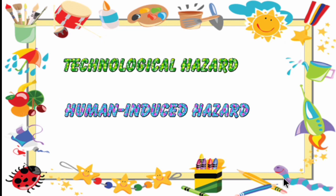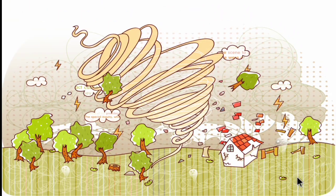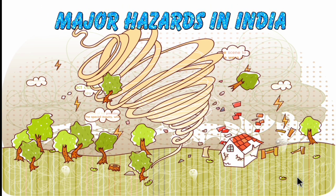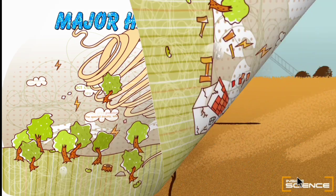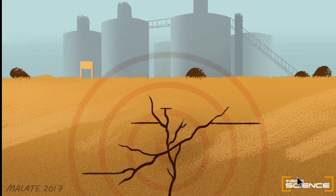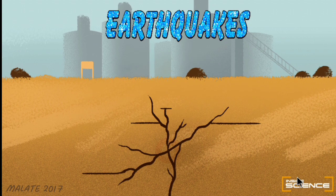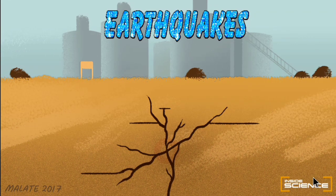We have seen examples and definitions for each in the previous session. Today we are going to see about the major hazards in India. The first one is earthquake, which is a natural hazard that humans cannot stop.